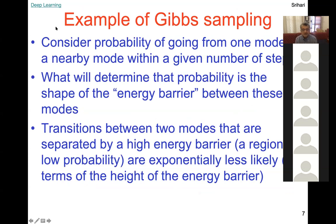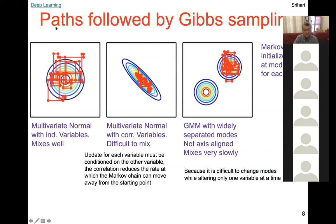In the case of Gibbs sampling, the probability of going from one mode to a nearby mode within a given number of steps is determined by the shape of the energy barrier between the modes. Transitions between two modes separated by a high energy barrier are exponentially less likely in terms of the height of that energy barrier — a nice analogy with physics.